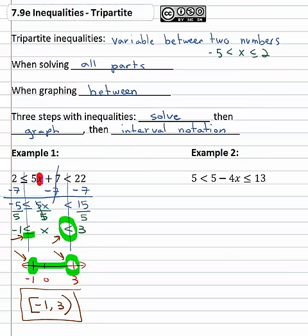Let's try one more example. Five is less than five minus four x is less than or equal to thirteen. Again, we'll balance through both inequalities trying to get the x alone in the center. Well, first we get rid of the five by subtracting it again from all three parts.